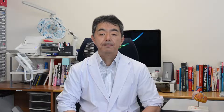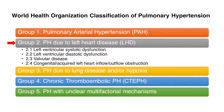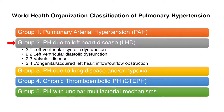Our laboratory recently developed an animal model of pulmonary hypertension due to left heart disease, which is classified as Group 2 pulmonary hypertension. The World Health Organization classifies pulmonary hypertension into five groups. The left atrial stenosis rat is an animal model of Group 2 pulmonary hypertension, which is the most prevalent form, and currently there are no approved therapies for this group.